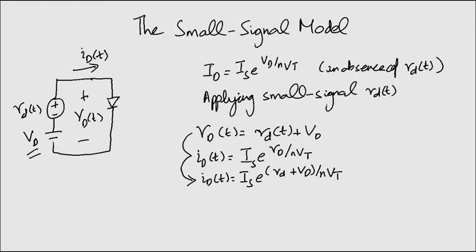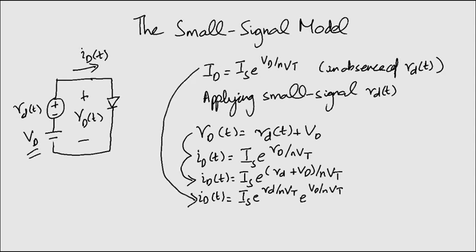This can be rewritten as this equation. Now, let's use this one and we get where we have replaced the current due to the DC voltage with the term ID with the capital D.